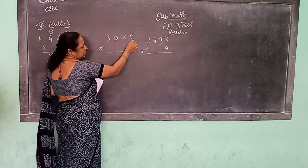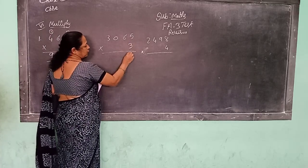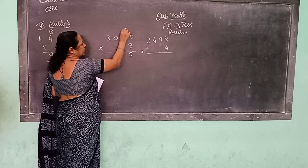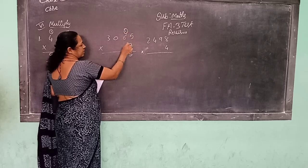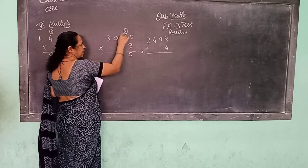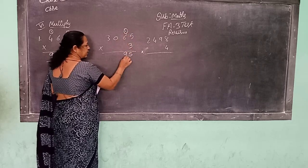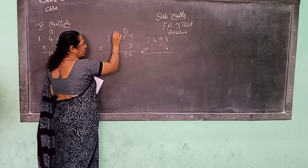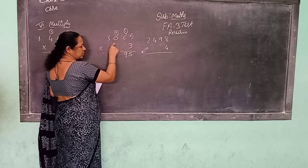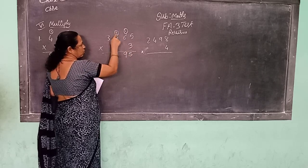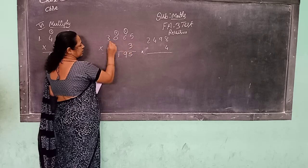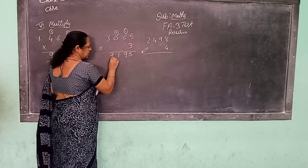3, 5's are 15. Right 5, 1 carry. 3, 6's are 18. 18 plus 1, 19. Right 9, 1 carry. 3, 0's are 0. 1. 3, 3's are 9.